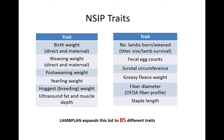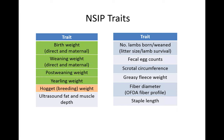Too often breeders enter NSIP expecting that having EBVs will cause customers to beat a path to their door and pay more for their sheep. That might happen, but at first it probably won't. Your job is to get customers to your door because your sheep work for them, and EBVs are a tool to breed better sheep. This slide overviews the main traits reported by the National Sheep Improvement Program — about 15 to 20 traits, some with direct lamb effects and maternal effects.